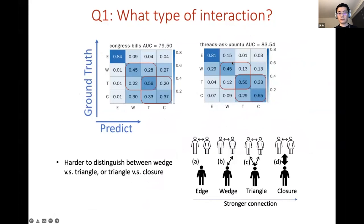The y-axis here corresponds to the ground truth pattern while the x-axis corresponds to the predicted patterns. Through this confusion matrix we find our model generally works well. However, as we may expect, it's harder even for our model to distinguish the wedge pattern versus the triangle pattern or the triangle pattern versus the closure pattern. This may be due to the essential hierarchy behind these patterns.